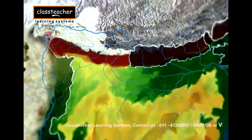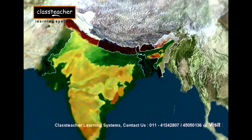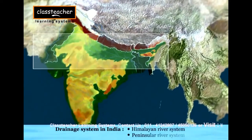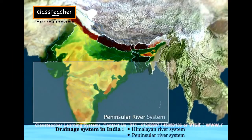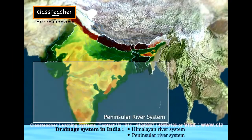The Indian river system is broadly divided into two groups: the Himalayan river system and the peninsular river system.